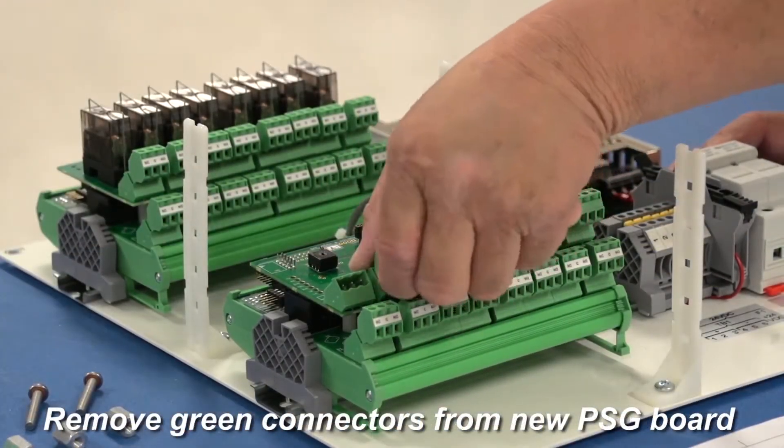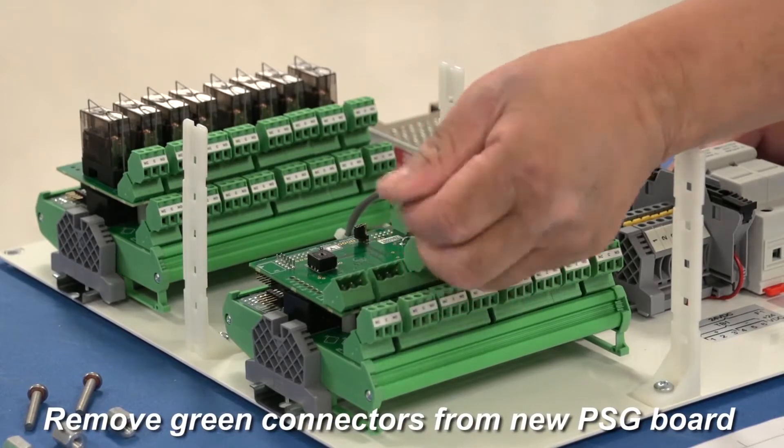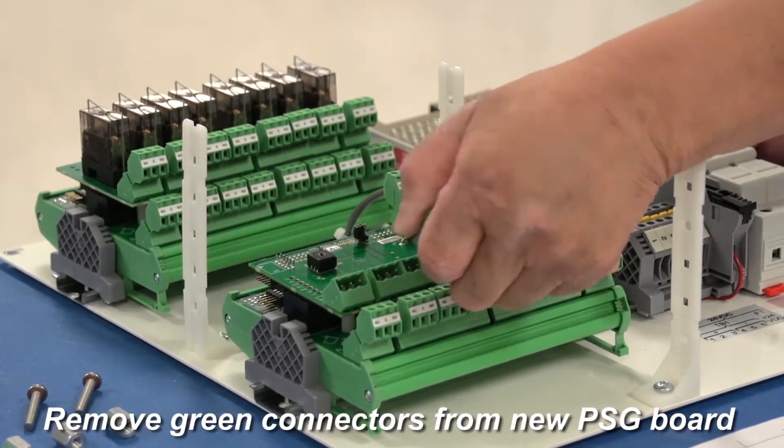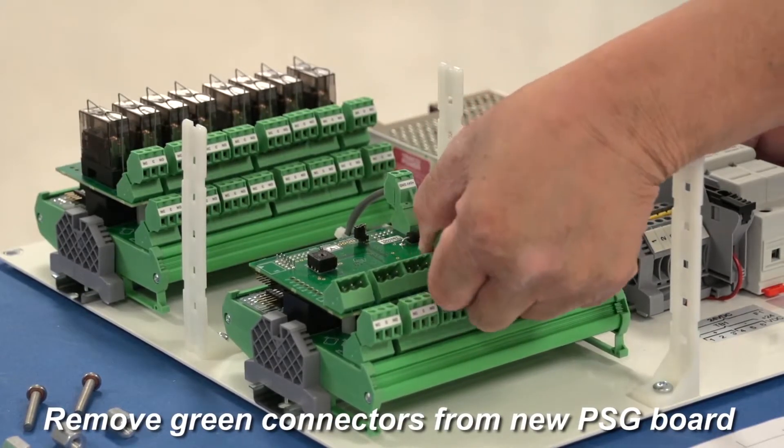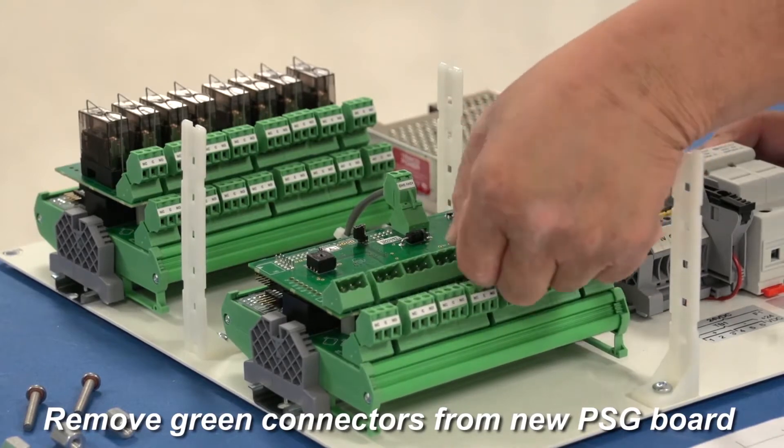Begin by removing the green sensor channel connectors from the bottom stack of the new panel. This is normally your PSG Sentry bus board, and it has eight connectors.